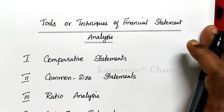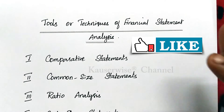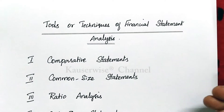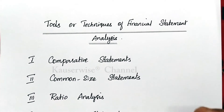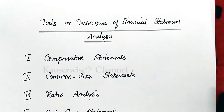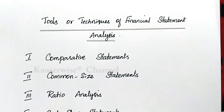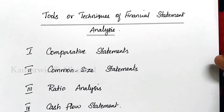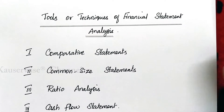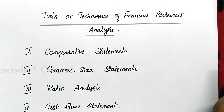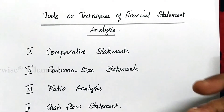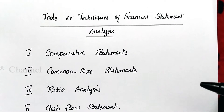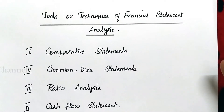The accounting process ends with preparation of the balance sheet and statement of profit and loss. These are the two statements we prepare at the end of the financial year. After preparing the income statement and balance sheet, the next step is the organization needs to analyze all the financial statements in order to make some major financial decisions.